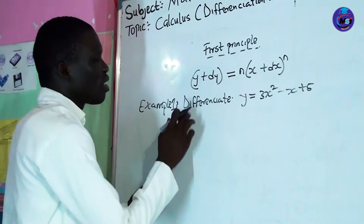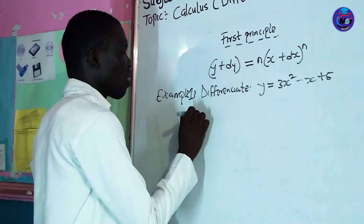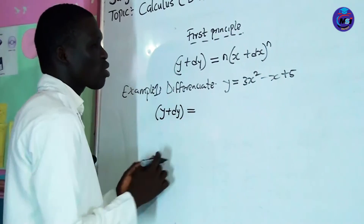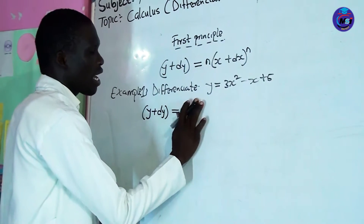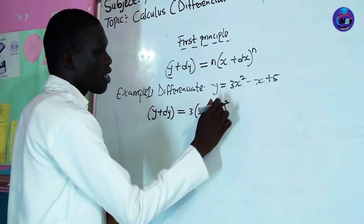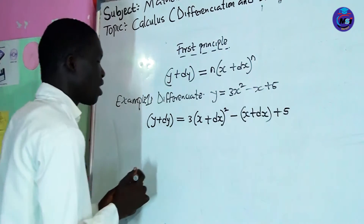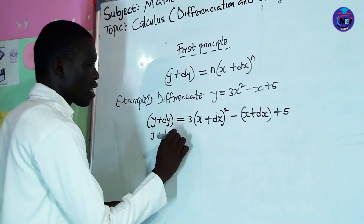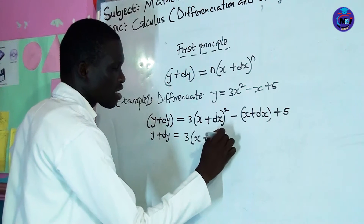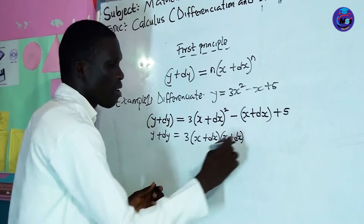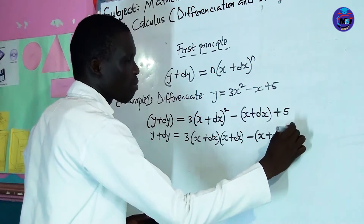Let's look at this example: differentiate y equals 3x squared minus x plus 5. Using first principle: y plus δy equals 3(x plus δx) squared minus (x plus δx) plus 5. We expand: y plus δy equals 3 times (x squared plus xδx plus xδx plus δx squared), minus (x plus δx), plus 5.